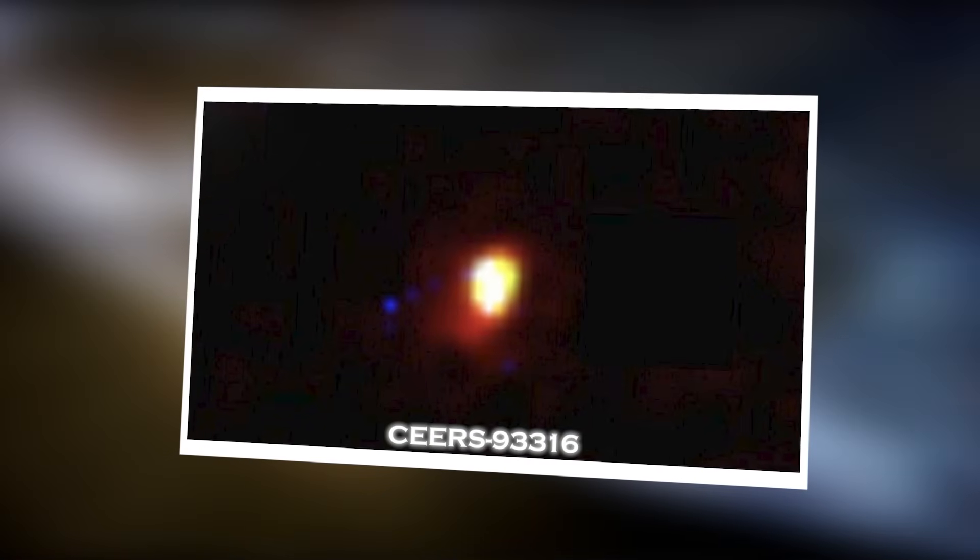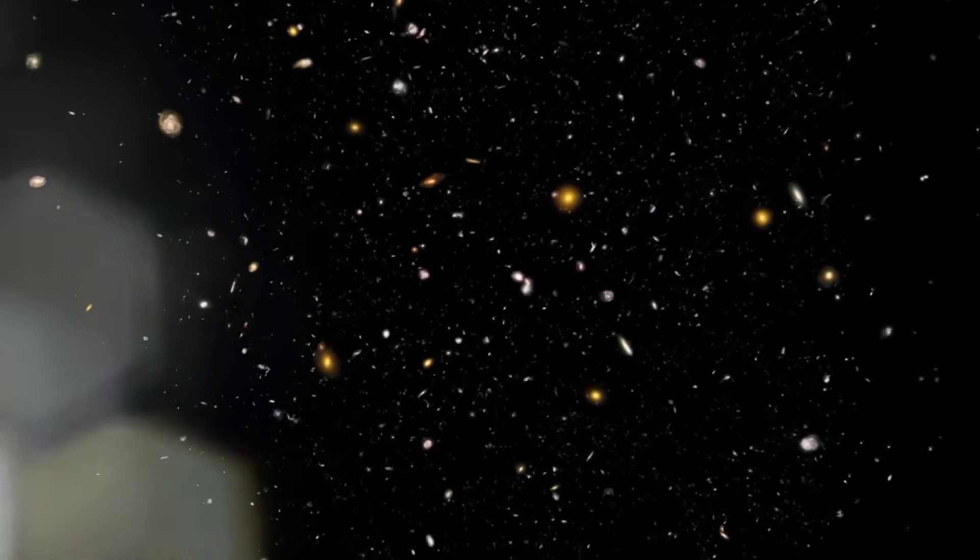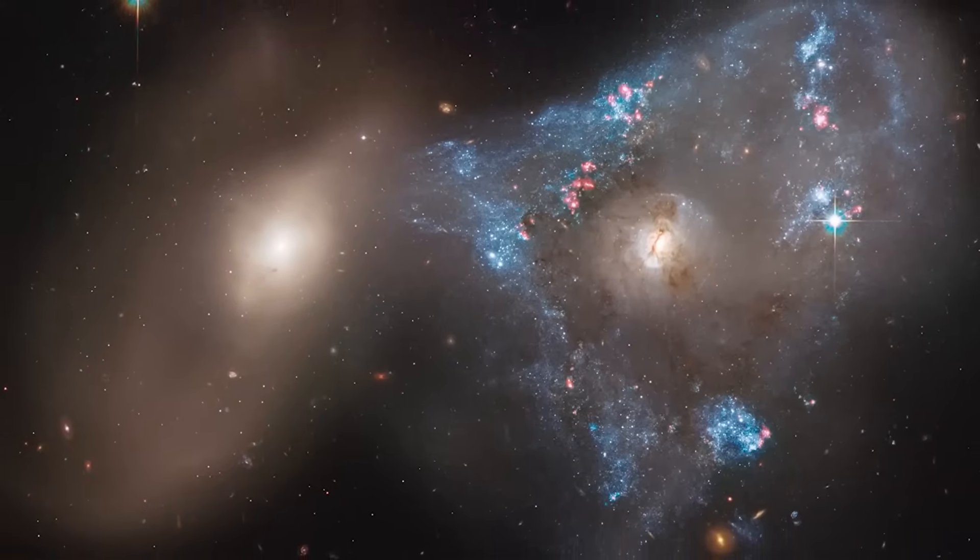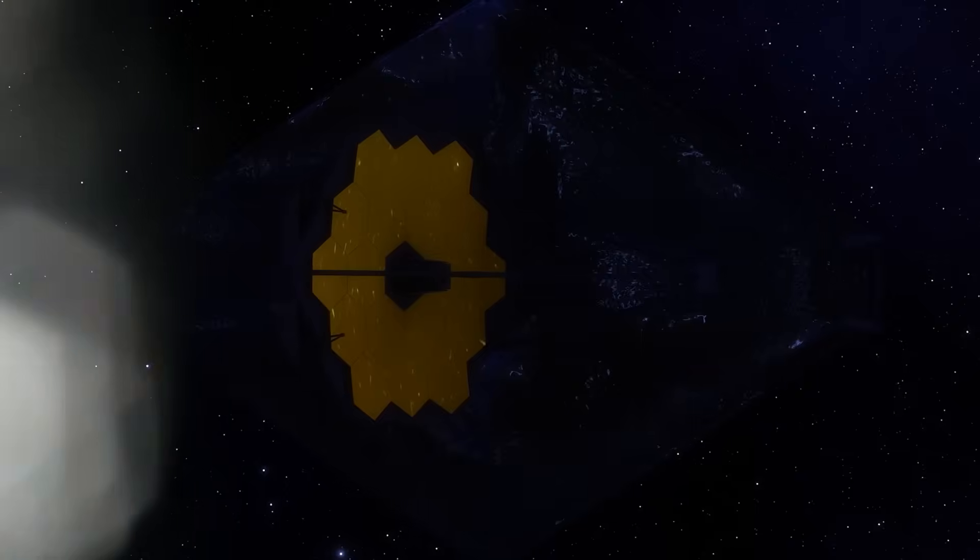This object, dubbed CEERS-93316, wasn't nearby at all. It was sitting at a redshift of 16.7, which places it just 230 million years after the Big Bang. And yet, this galaxy wasn't a flickering, half-formed cloud of primordial dust. It was a giant, with stars already fully formed and organized in complex structures. That's like finding an adult human in a newborn's crib.